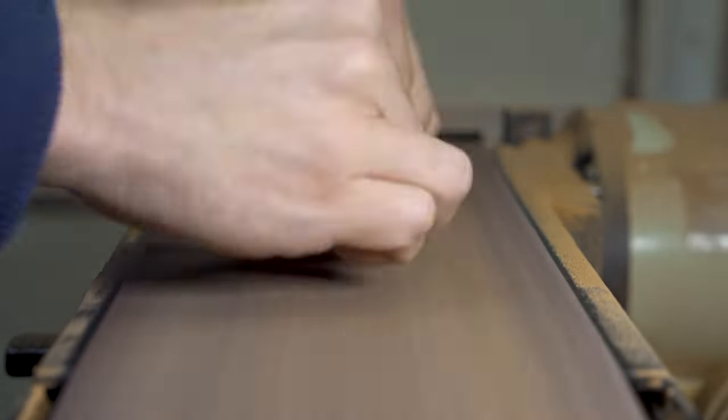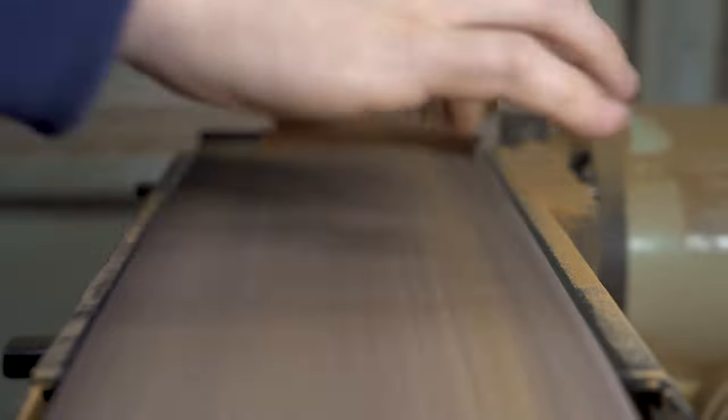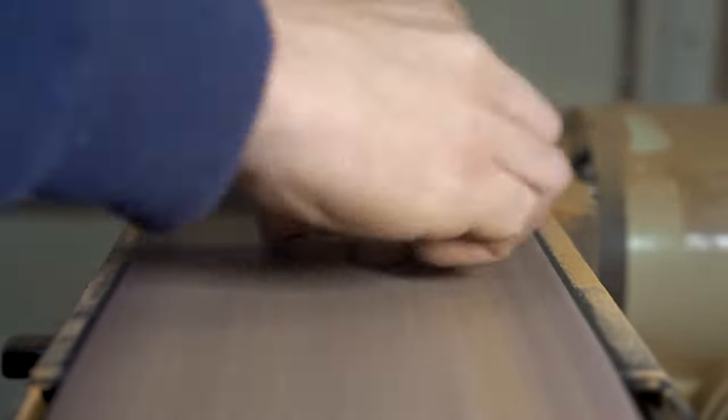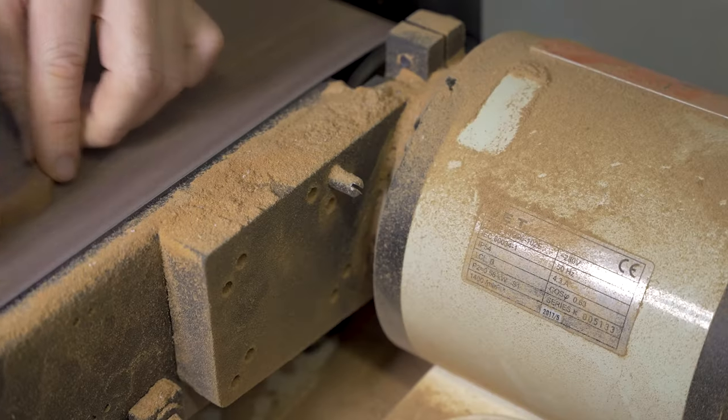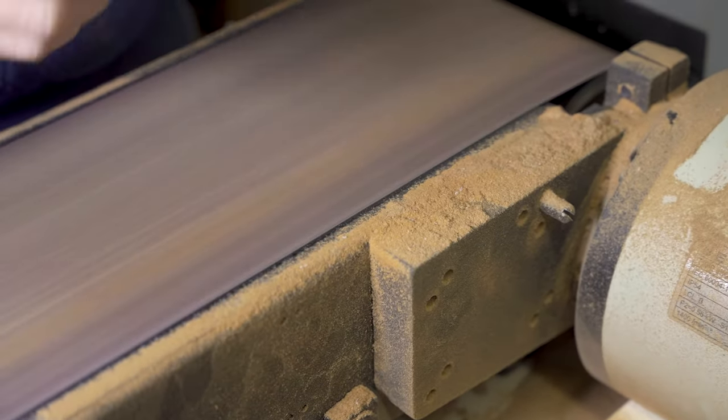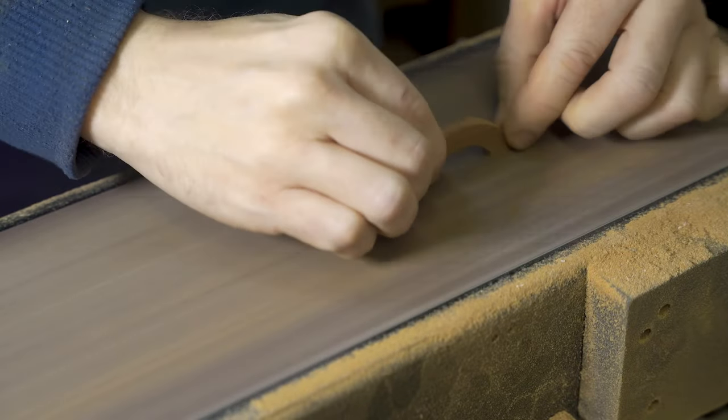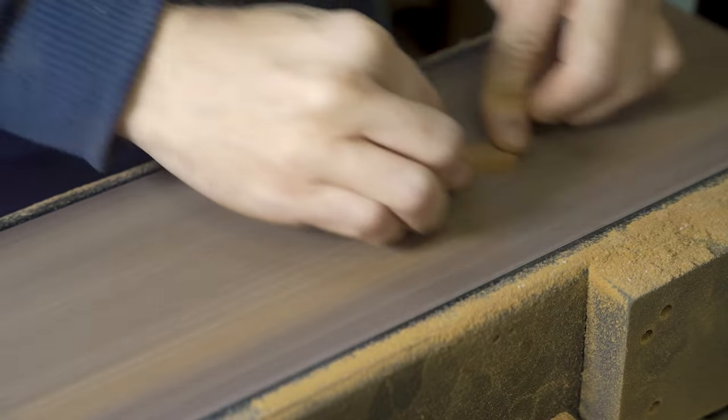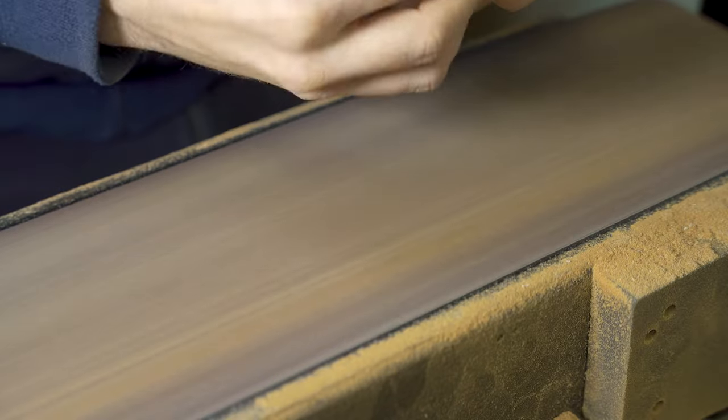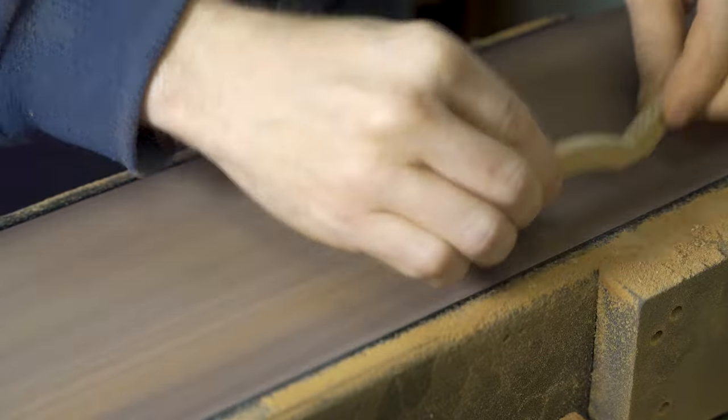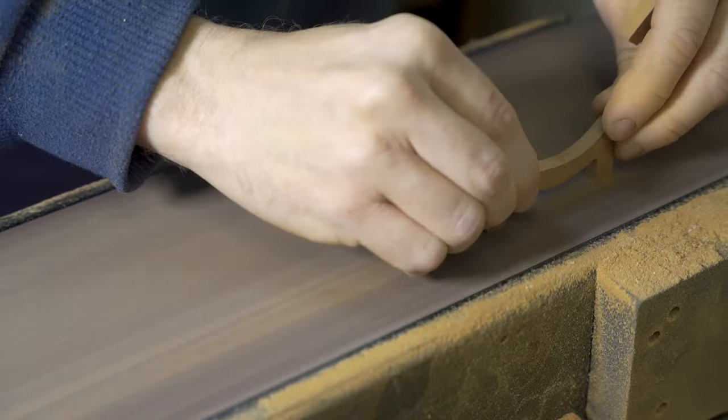Once this part is completed we use our belt sander once more to sand everything nice and smooth and refine the finish, making sure that those pieces that have been cut in half have nice flat edges ready for being put back together. The belt sander is a fantastic piece of equipment for us when it comes to refining what we do.